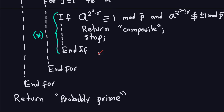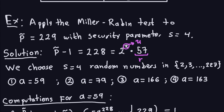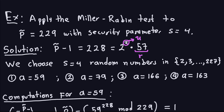So now let me go ahead and look at a couple of examples where I'm going to put down small numbers. The first example is: apply the Miller-Rabin test to p̂ equals 229 with security parameter s equal to 4. We want to check whether this number is prime. The number of a's we're going to choose between 2 and p̂ minus 1 is going to be 4 — that's what the security parameter actually means. The first thing you have to do is compute p̂ minus 1, which is 228.